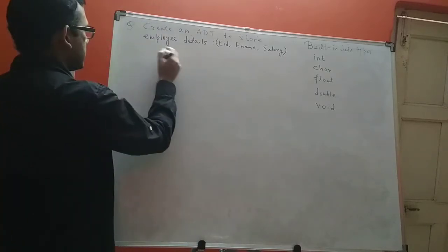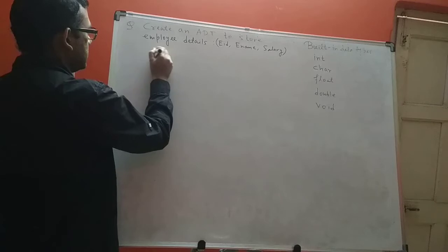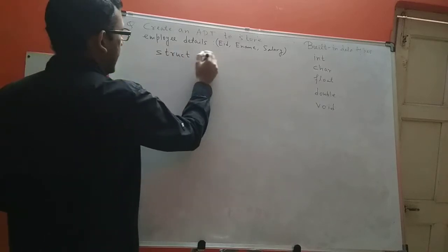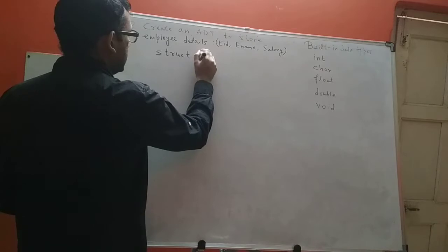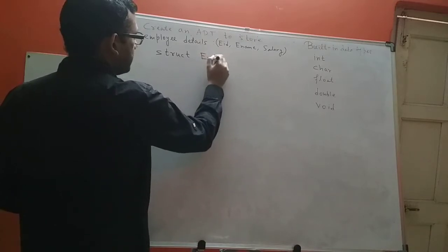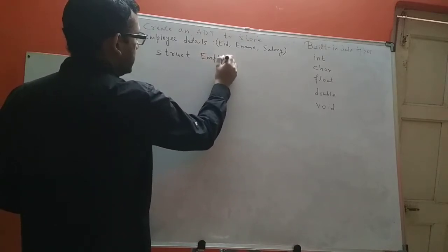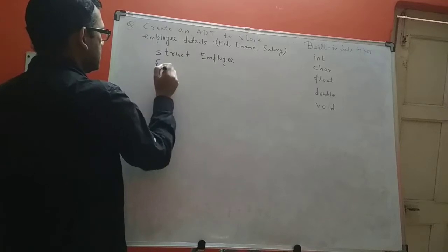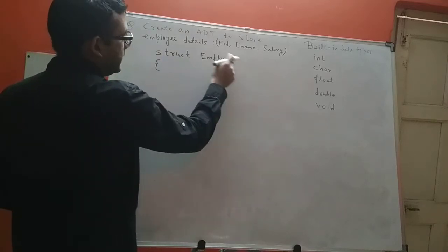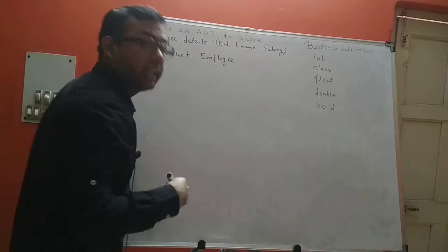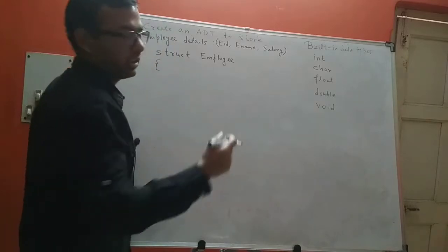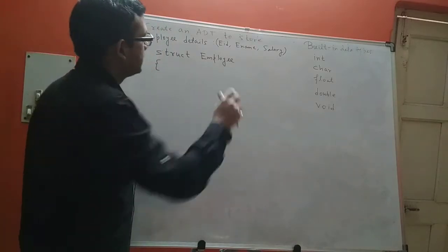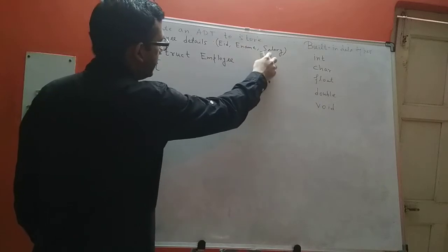Let's define the structure. I'll write struct and then give it a name — let's call it employee. So employee becomes the name of my data type. Variables of this data type will have three parts: the EID, the E-Name, and the salary.